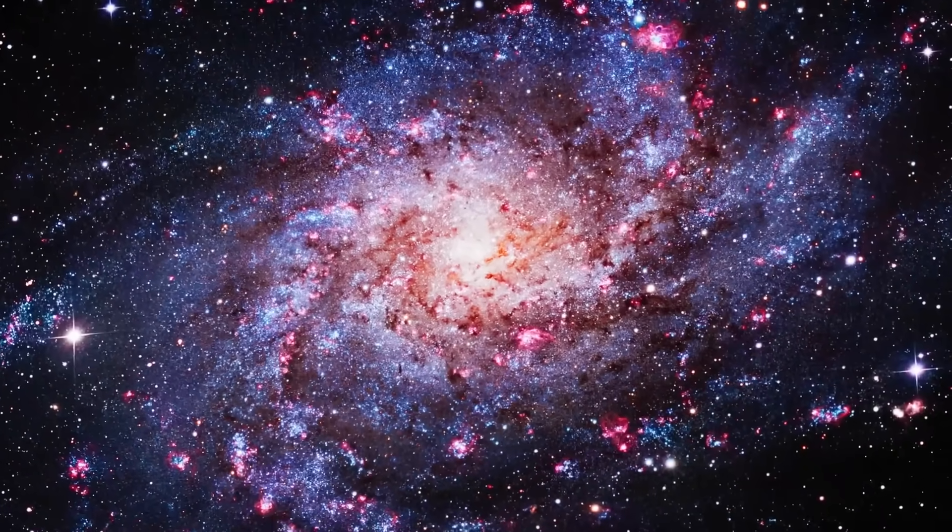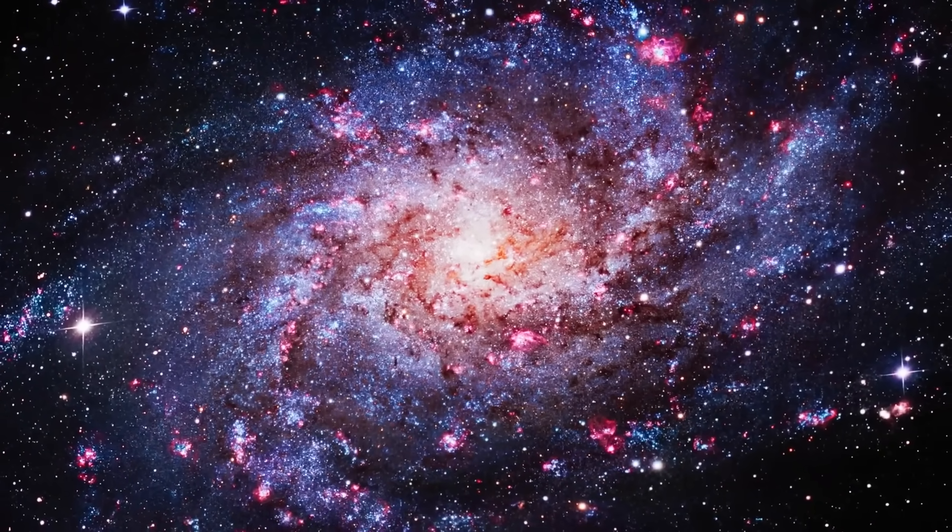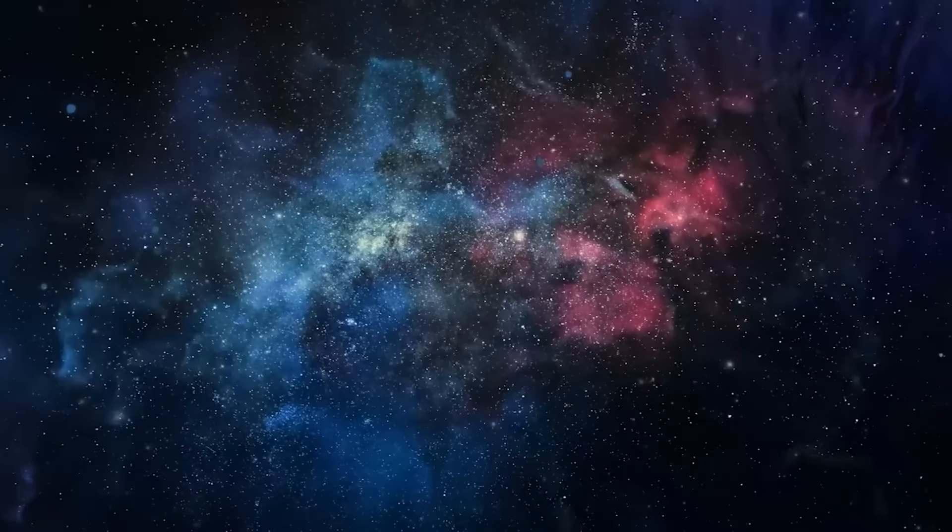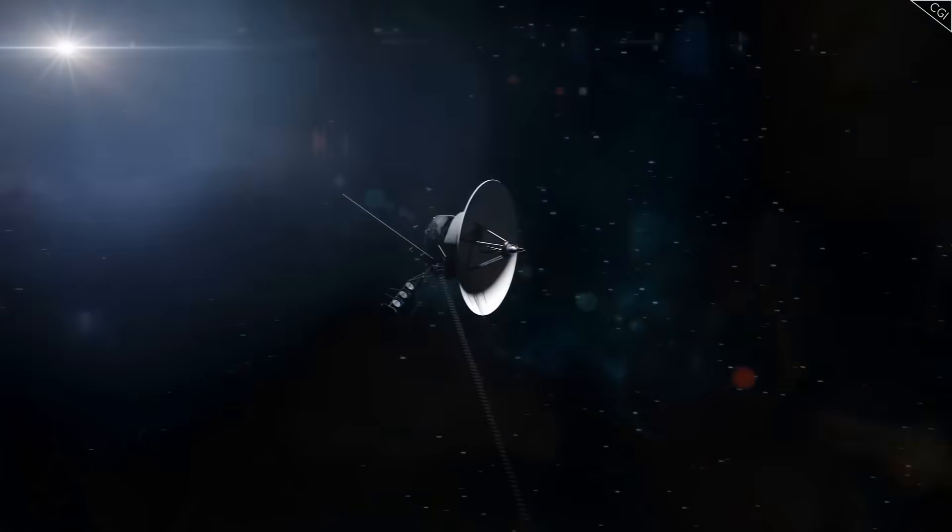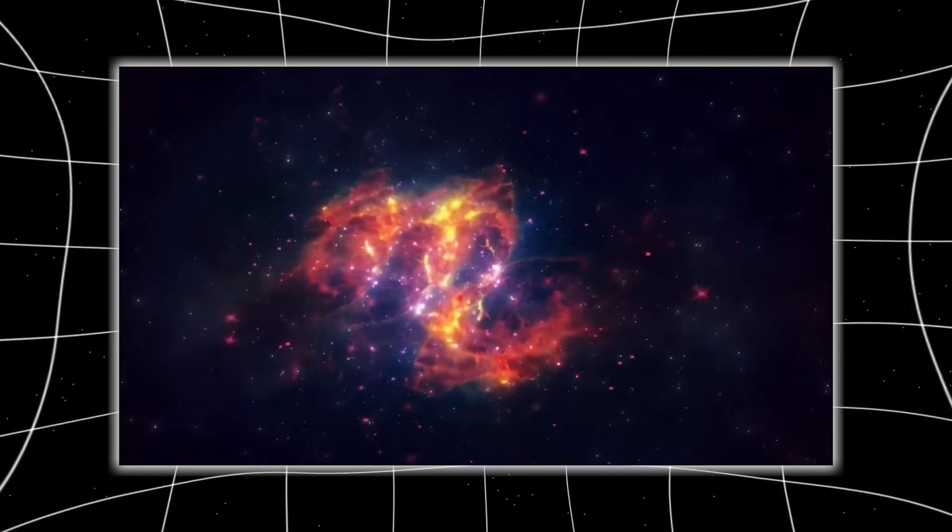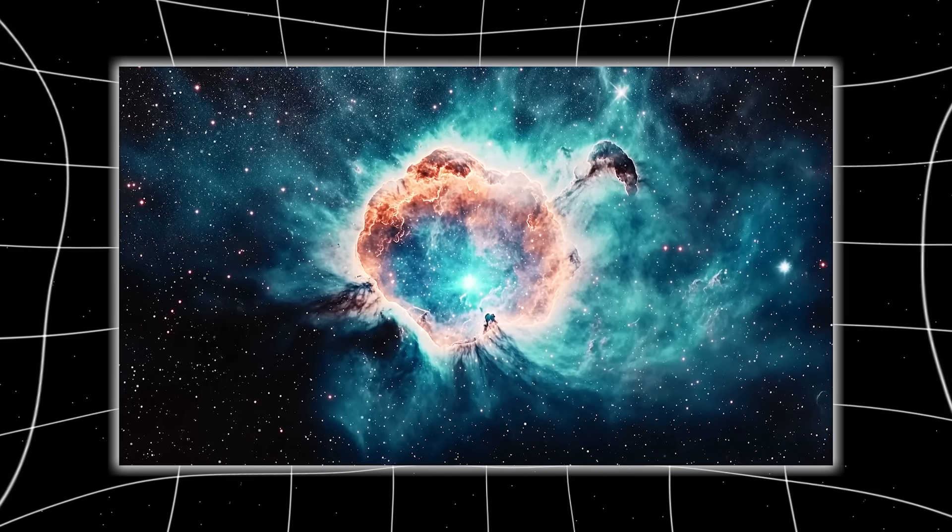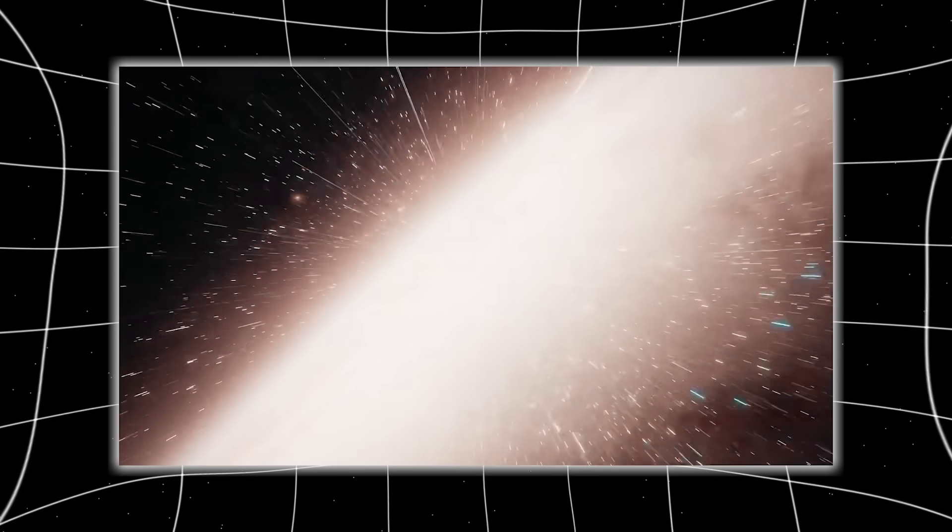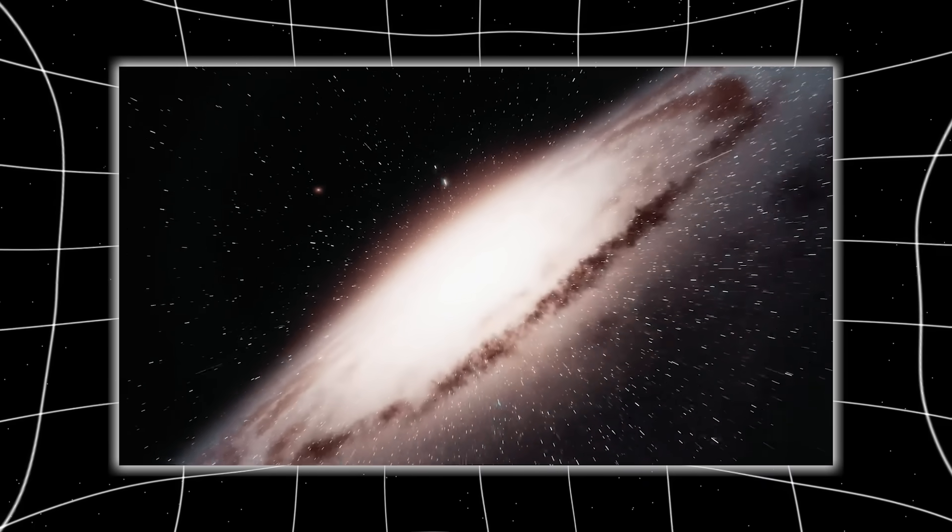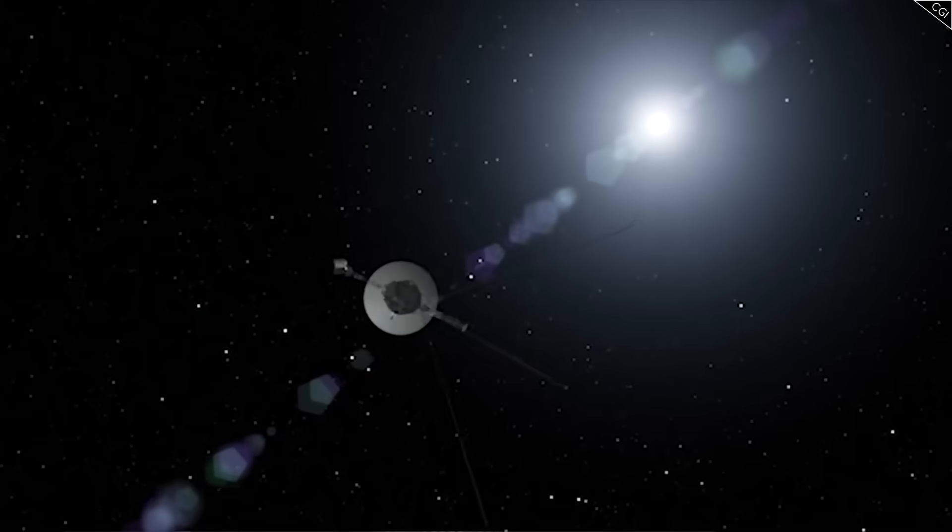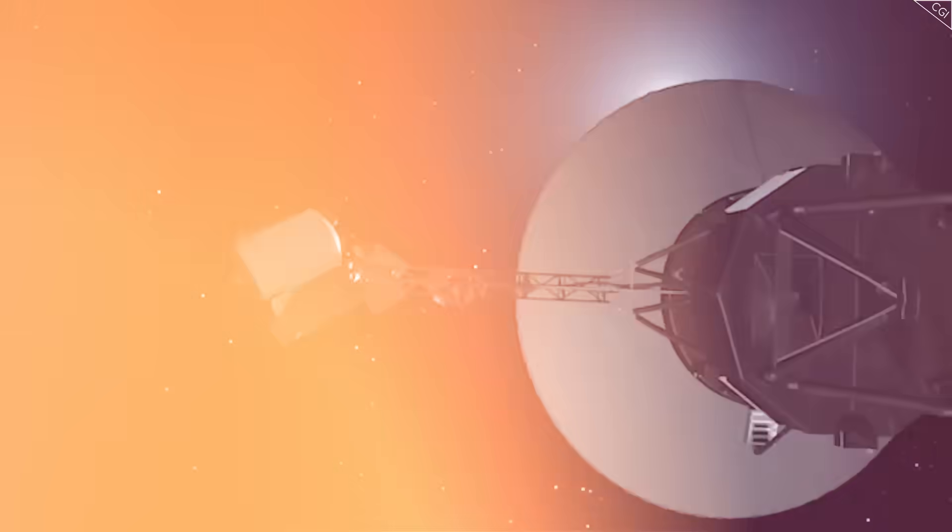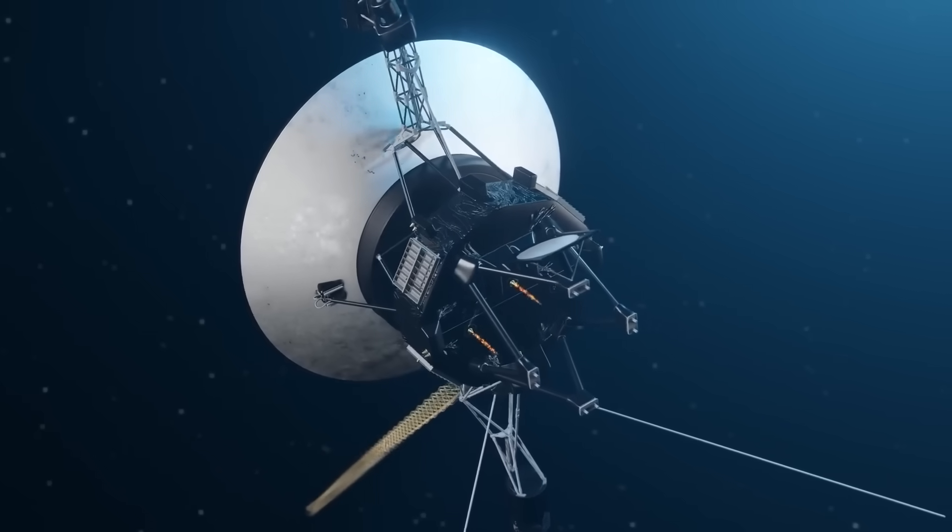But it wasn't just the hum. The spacecraft also measured density spikes. Bursts of pressure like shockwaves left behind by ancient supernovae. It's as if Voyager was passing through layers of memory. Zones in space shaped by stellar deaths that happened thousands, maybe millions of years ago. Interstellar space isn't an empty corridor. It's a swirling ocean of invisible currents and echoes. And Voyager is our tiny sailboat, navigating blind through weather we never even knew existed.